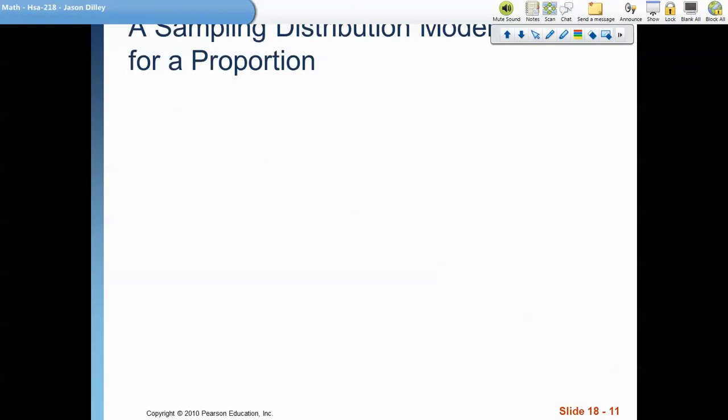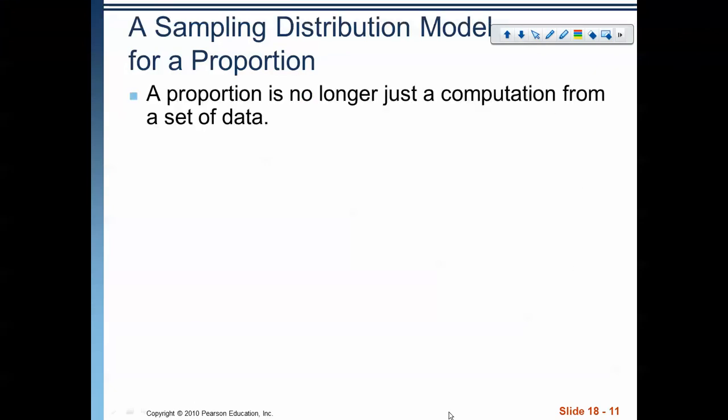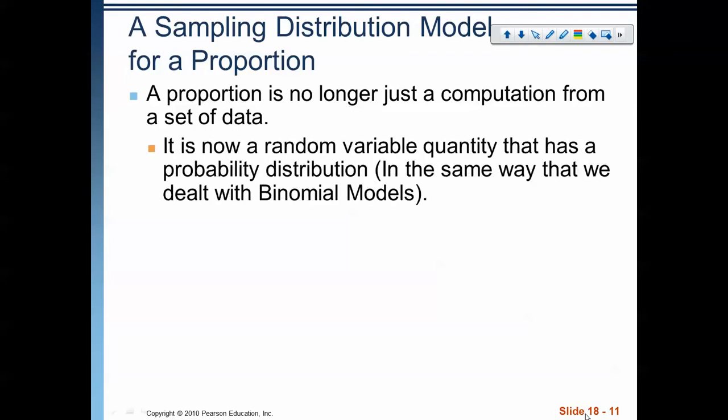Now, when our assumptions and conditions are met, we have this thing called a sampling distribution model for proportions. And what's important to recognize is that a proportion is no longer just a computation. It's a random variable, a random variable quantity that has a probability distribution. In fact, it's the same way that we dealt with the binomial models that we did in Chapter 17.